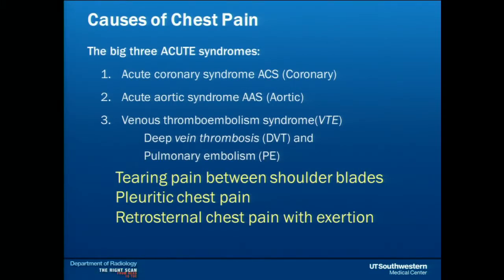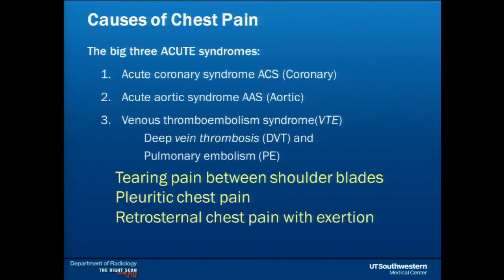The patients would present differently in a textbook. In real life, sometimes there's a lot of overlap in symptoms, but retrosternal chest pain would be for acute coronary syndrome. Pleuritic chest pain is what we typically consider associated with pulmonary embolism, and tearing chest pain between the shoulder blades would lead you along the path of aortic pathology such as a dissection.